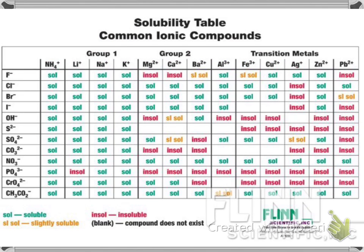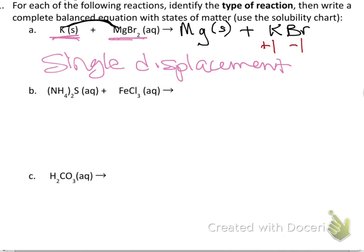I check the solubility chart for KBr — finding K and Br and seeing where they intersect — and it says soluble. Whenever it's soluble, I write (aq), meaning it's dissolved in water. For the balanced reaction, I need the same number of each atom on both sides. I have one K on each side, and one Mg on each side, but there are two bromines on the left due to the subscript, and only one on the right — that's a problem.